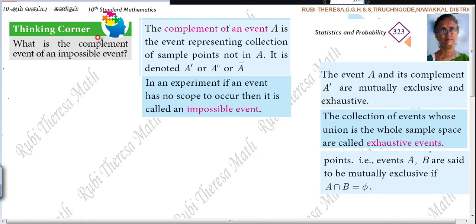What is the complement event of an impossible event? First, you should know what is meant by an impossible event. An impossible event has no scope to occur — nil scope.